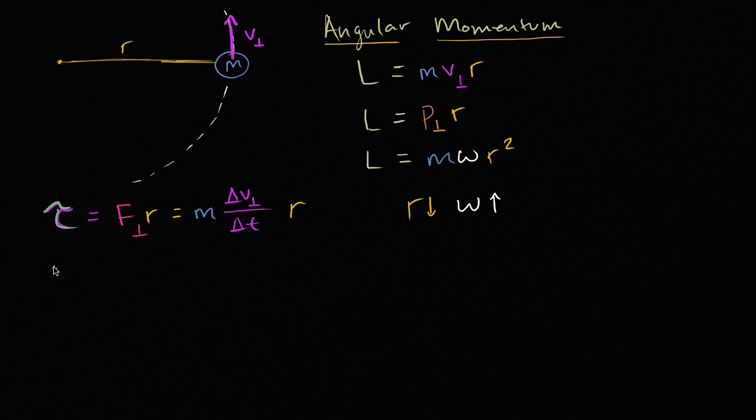We get torque times Δt, torque times Δt is equal to mass times Δv, Δv in that perpendicular direction, times r.